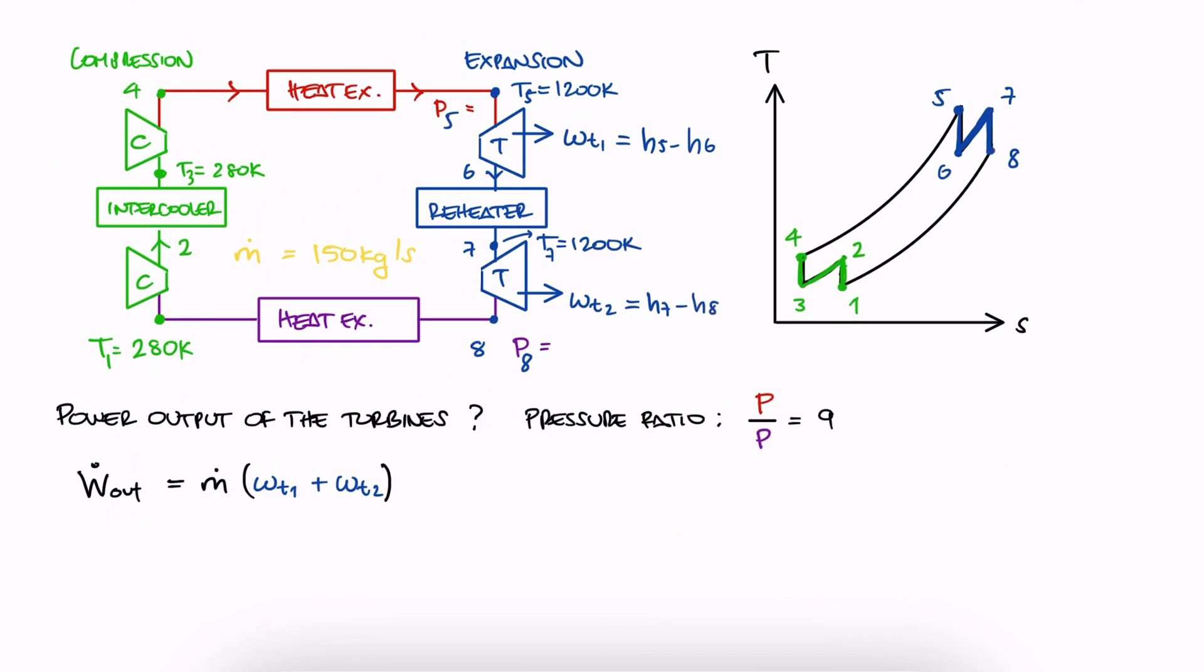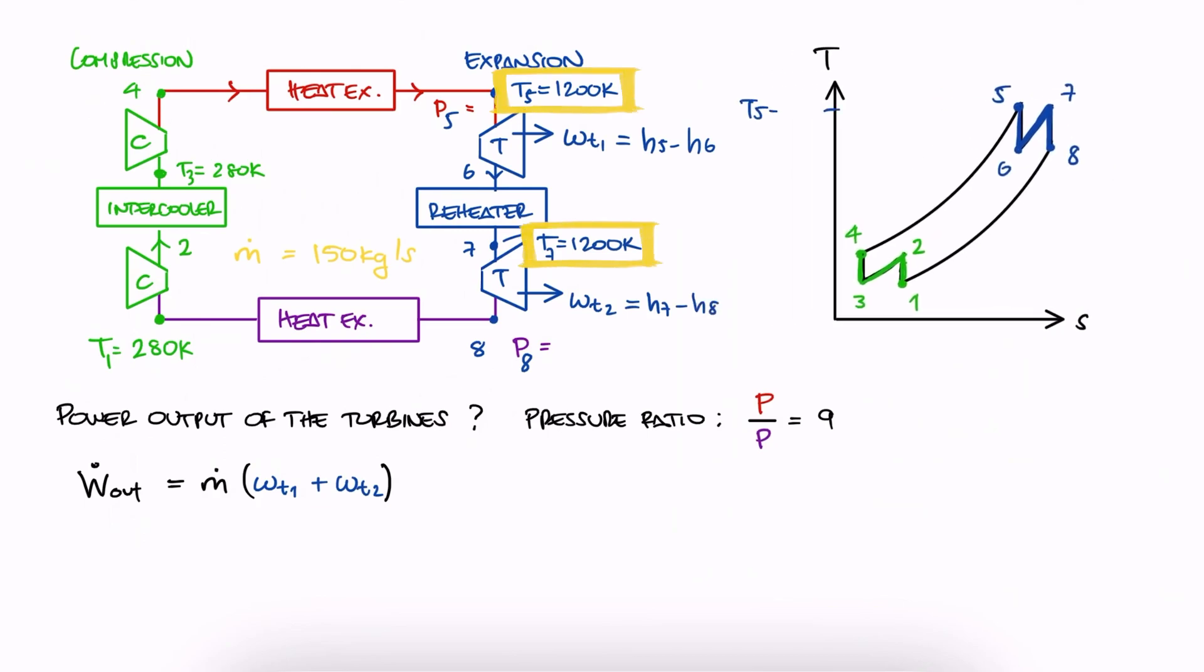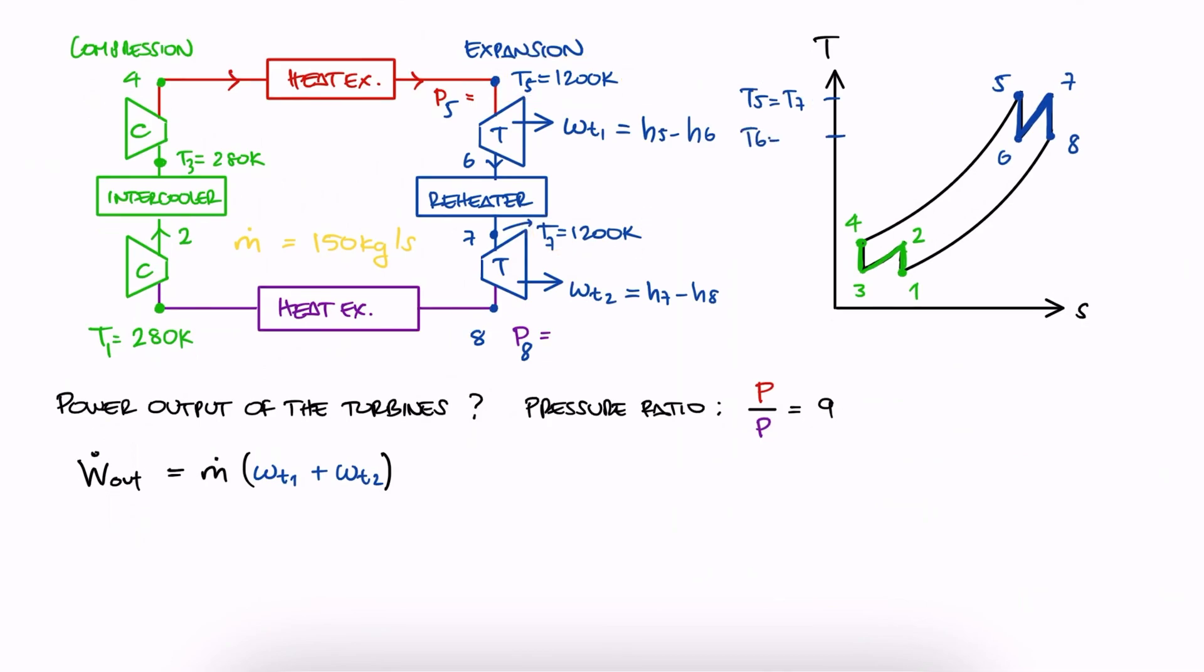Since we're told that the air enters each turbine at the same temperature, which we stated in the main lecture video as common practice for reheating processes, then H5 is equal to H7 and H6 is equal to H8. This means that the specific work is just 2 times H5 minus H6. Therefore, we need H5 and H6.